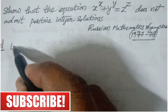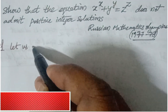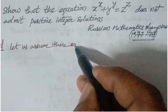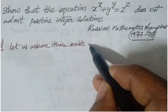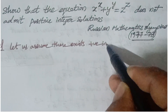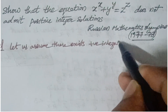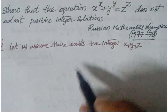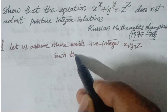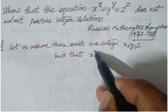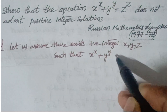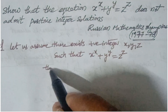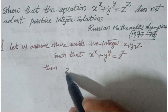Now we are going to start the problem. First of all, let us assume that there exist positive integers x, y, z such that x to the power of x plus y to the power of y is equal to z to the power of z.